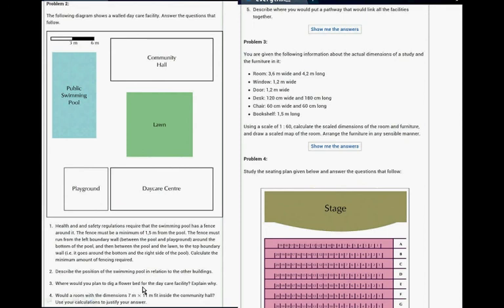Describe the position of the swimming pool in relation to the other buildings. Where would you dig a flower bed for the daycare facility? Explain why. Would a room with dimensions seven meters by eleven meters fit inside the community hall? Use your calculations to justify your answer. Describe where you would put a pathway that would link all the facilities together.